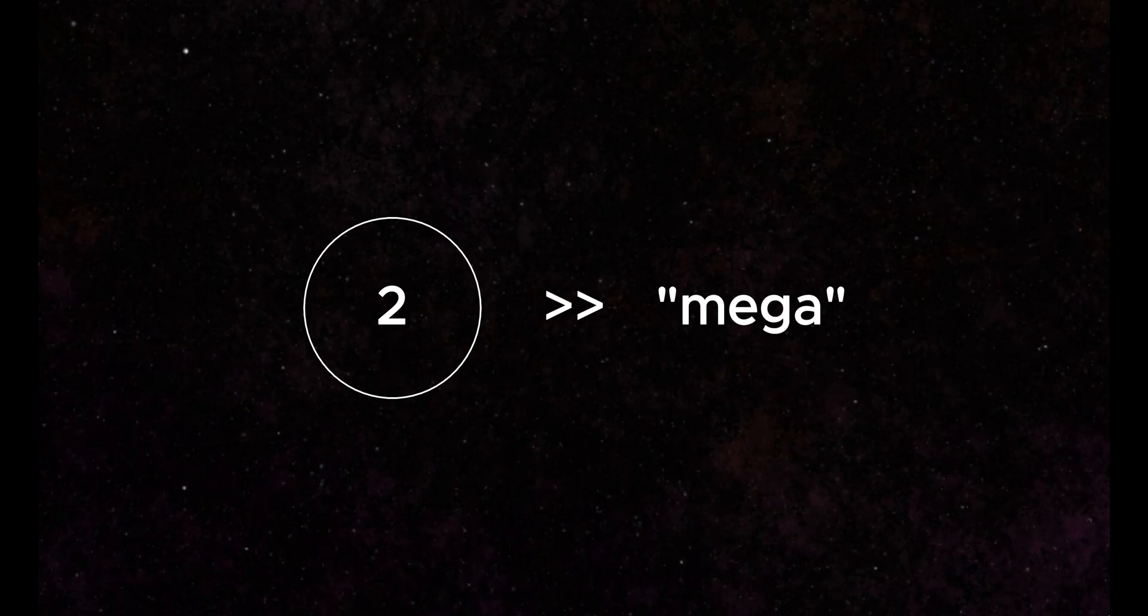Last time, we defined Moser's number, a number that so massively overcomes numbers like Mega and Skewes' number, that we need some new tools to really describe its size.